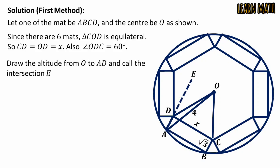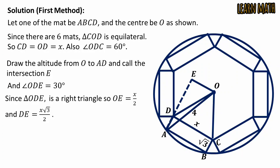Draw the altitude from O to AD and call the intersection E. And angle ODE will be 30 degrees because angle ODC is 60 degrees. Since triangle ODE is a right triangle, so OE equals x by 2 and DE equals x square root of 3 divided by 2.